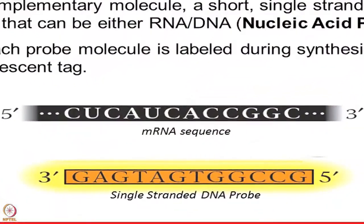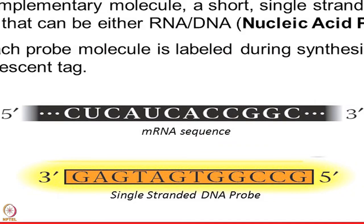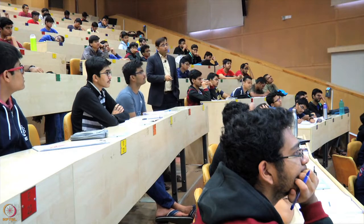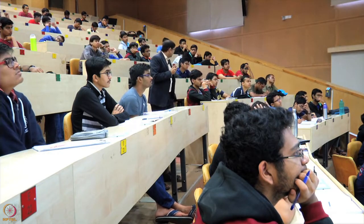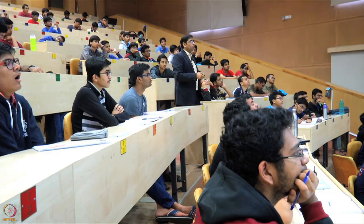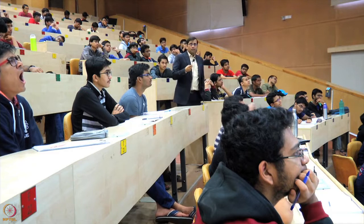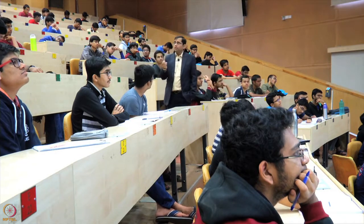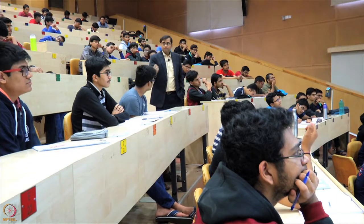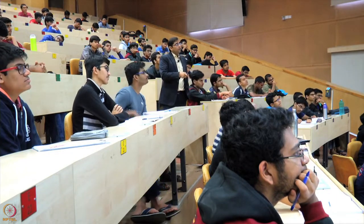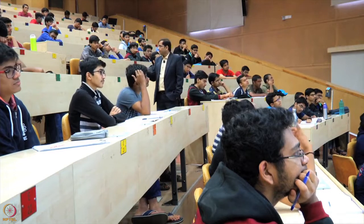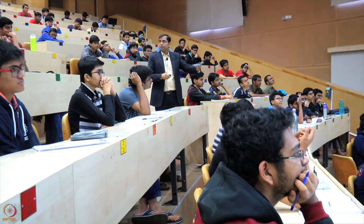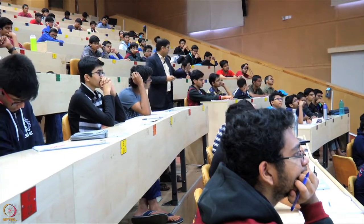These complementary molecules are usually short single-stranded nucleic acids and can be either DNA or RNA. Each probe can be labeled during synthesis using fluorescence to monitor where a particular gene is expressed. If you want to study whether gene X is expressed in a nerve cell or muscle cell, you make a fluorescently labeled probe. Wherever it binds, you detect it using fluorescent microscopes or scanners to see where that particular gene is expressed.